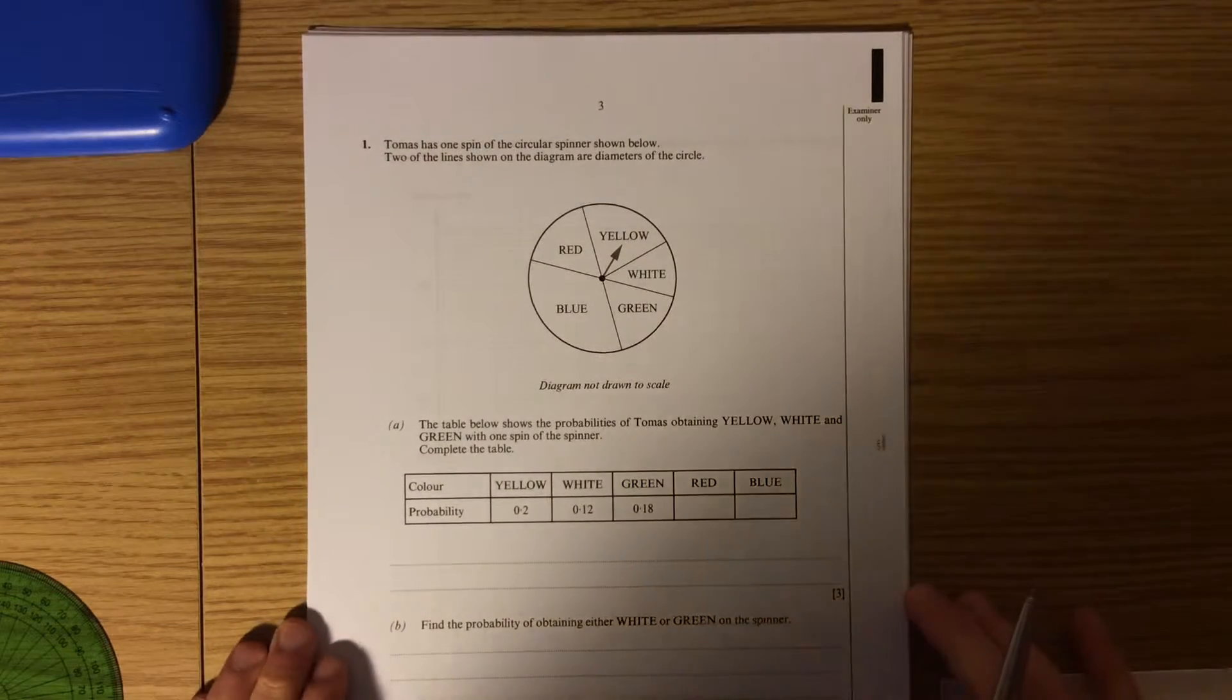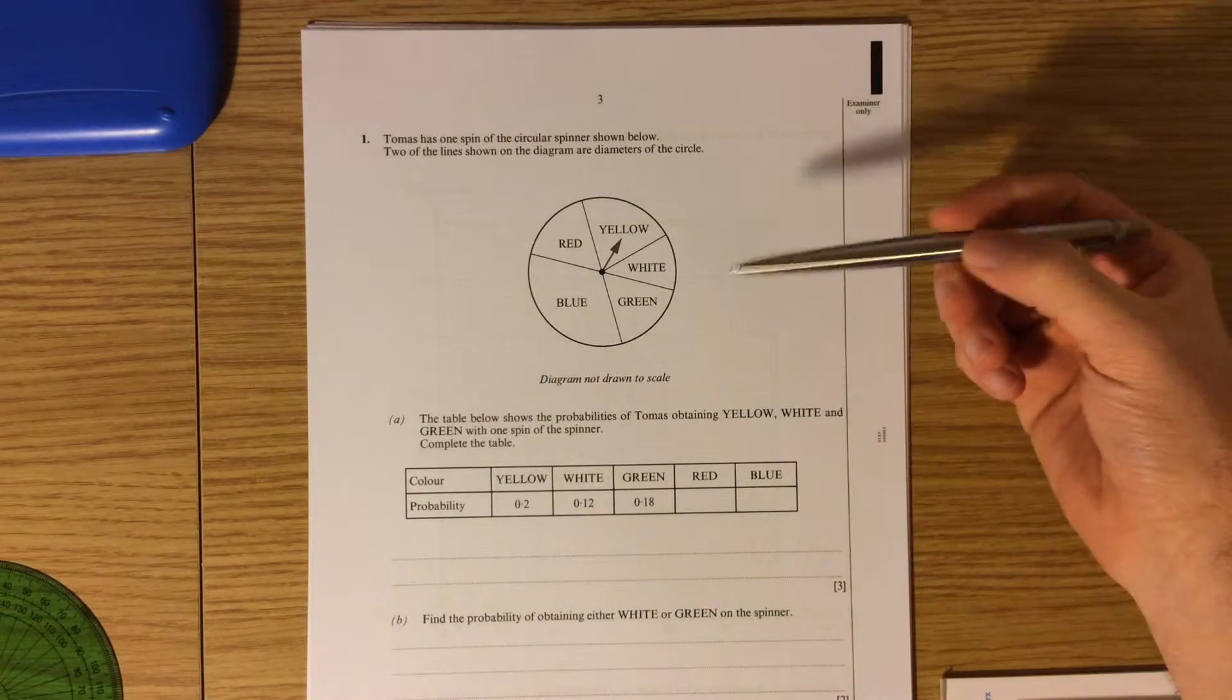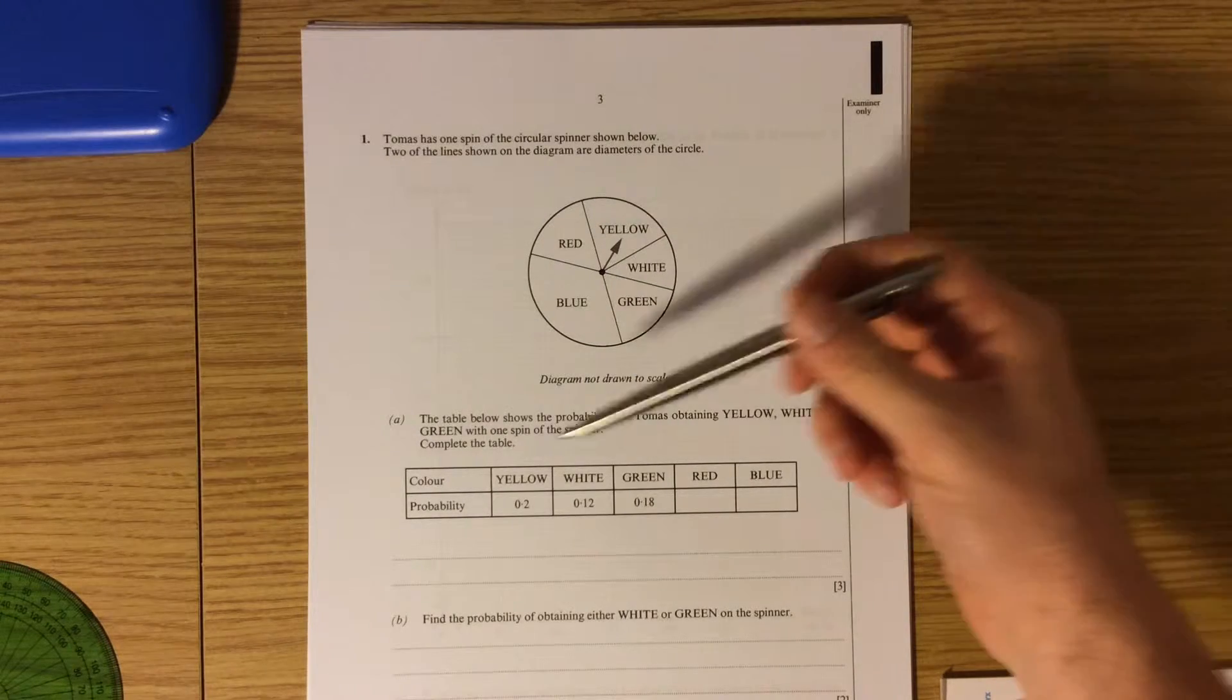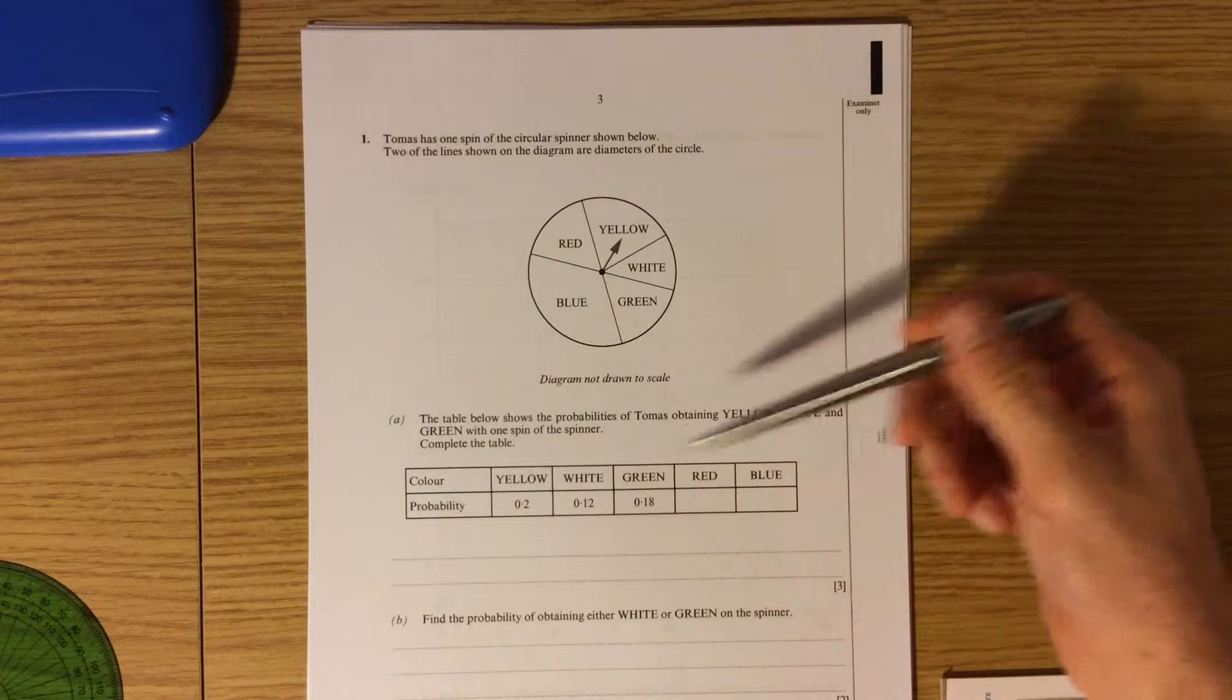Hi Artiva, paper 3, video solutions. So, question number 1. The table below shows the probability of Thomas obtaining yellow, white and green with one spin of the spinner. Complete the table.